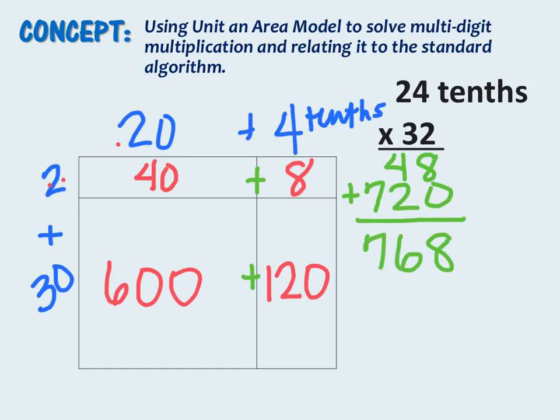But we must remember that this is not 768 wholes. It's 768 tenths. So now we need to convert this back to tenths. We know that 768 tenths is actually 76 and 8 tenths. Now let's think back to our original estimate. Well we said that 2 and 4 tenths times 32 was approximately 2 times 30, which is 60.